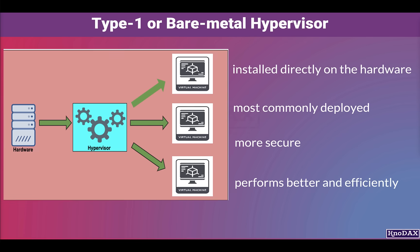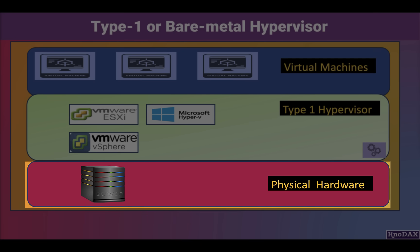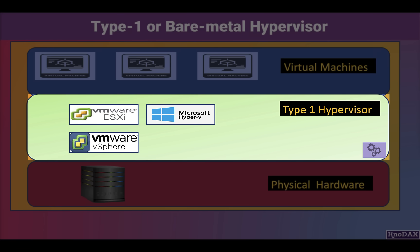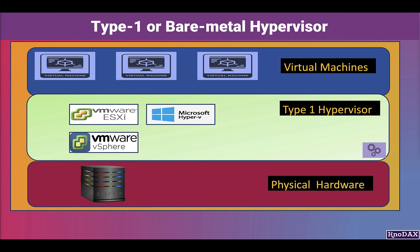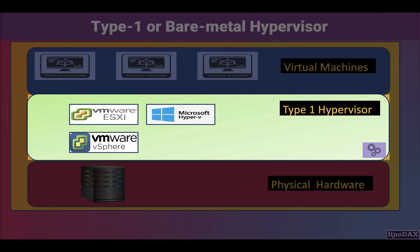This is the diagram for type 1 or bare metal hypervisor. As you can see, at the bottom layer we have a physical machine, then we have type 1 hypervisor running on the bare metal, and on the top layer we have virtual machines. Examples of type 1 hypervisors are VMware ESXi, VMware vSphere, and Microsoft Hyper-V. And Xen Hypervisor, an open source type 1 or bare metal hypervisor that allows multiple VMs to run on the same physical hardware.